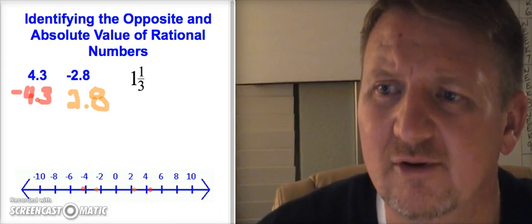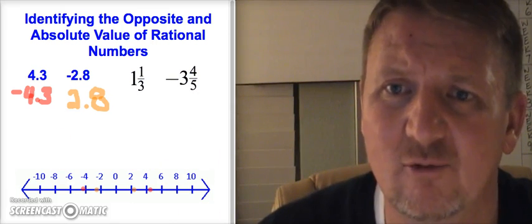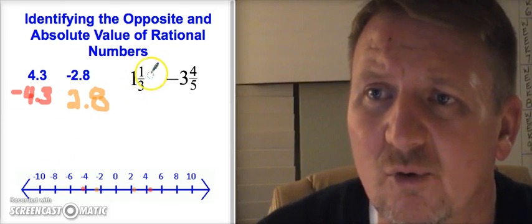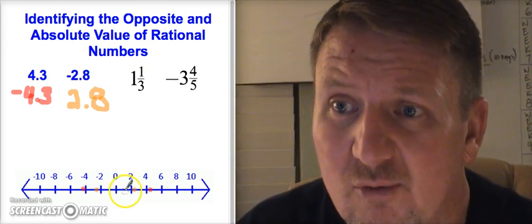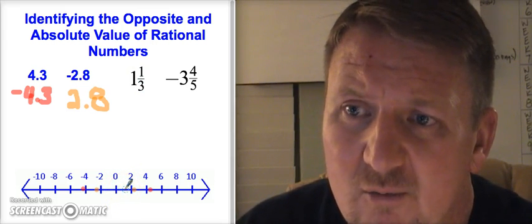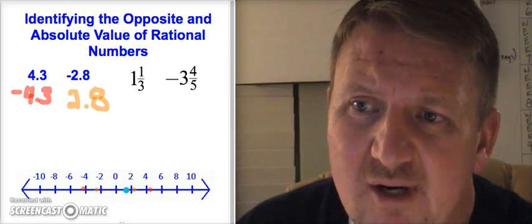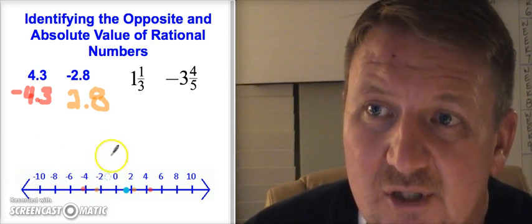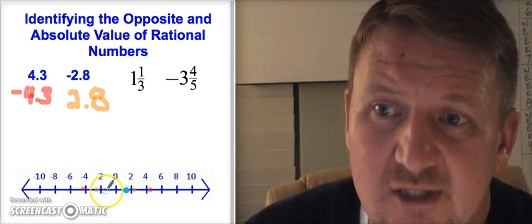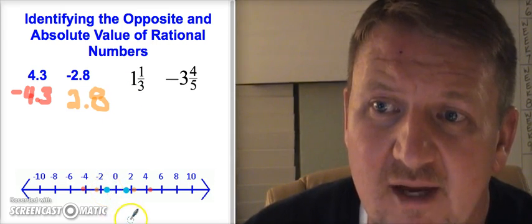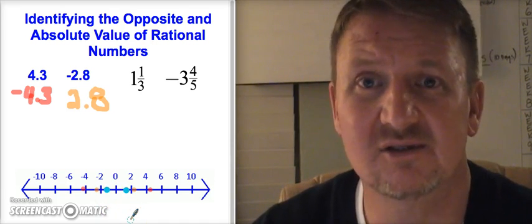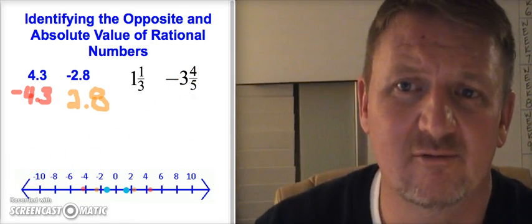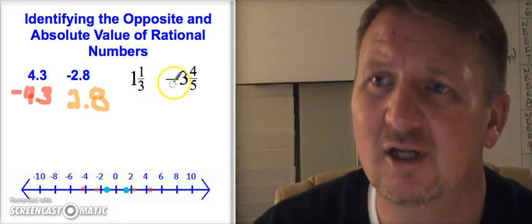Now let's look at fraction examples: one and one-third, and three and four-fifths. One and one-third is positive, so it goes to the right of zero. One is here, and one-third puts it just a little bit past one. To find the opposite, we go the same distance to the left of zero — one, and then just a little bit past it going left. The opposite of one and one-third is negative one and one-third.